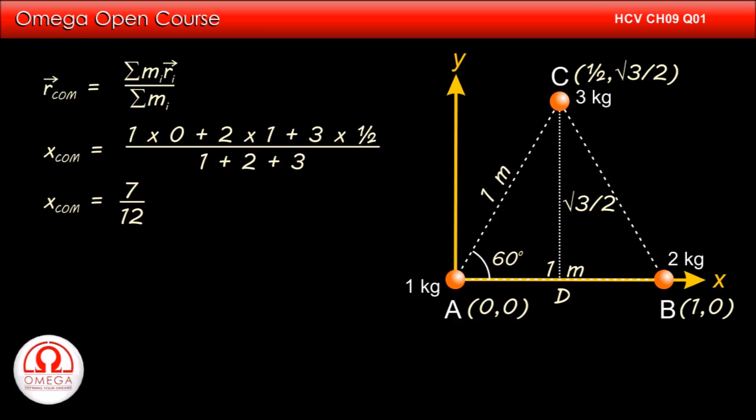Also, as the y coordinates of the 1 kg and 2 kg particles is 0 and that of the 3 kg particle is √3/2, the y coordinate of the center of mass is (1×0 + 2×0 + 3×√3/2)/(1+2+3). Simplifying, we get √3/4.